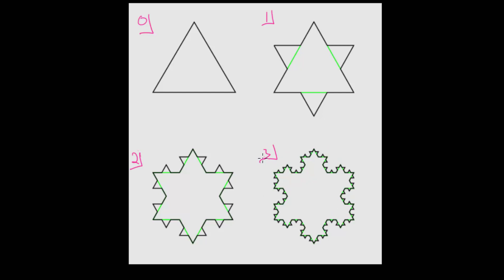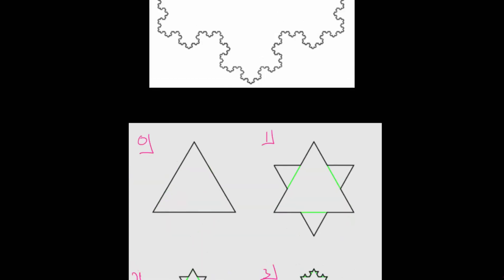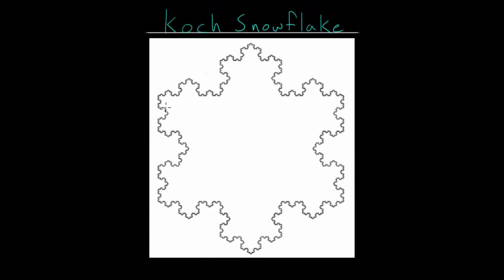Of course, this process will be carried out infinitely many times, and the final resulting product is what we call the Koch snowflake.